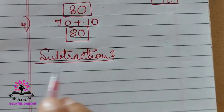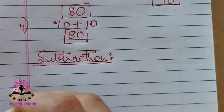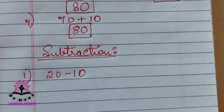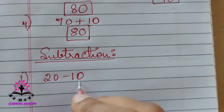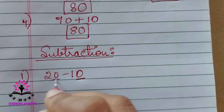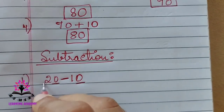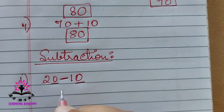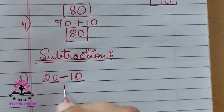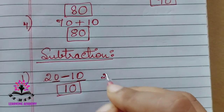Similarly, let us solve subtraction problems. 20 minus 10: zero in the unit place for both. In the tens place, two minus one is one. Zero in the unit place — 10 is the answer.